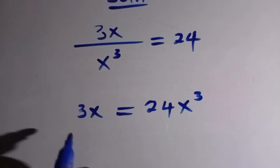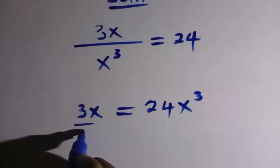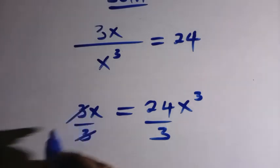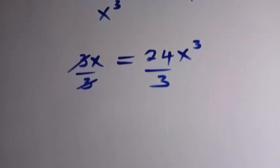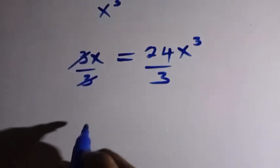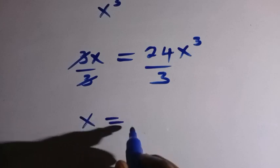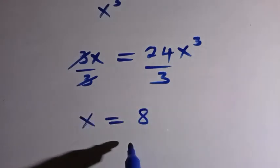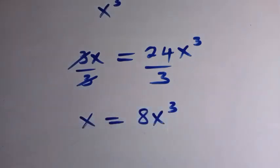Then, suppose I divide this side by 3. If 3 cancelled 3, what we have left here is x equals... so 3 will go in 24, that is 8 times. We have this as x cubed.